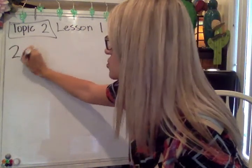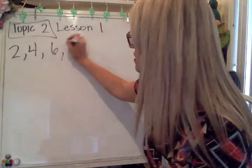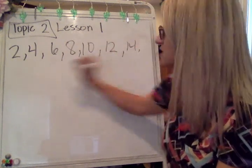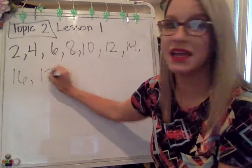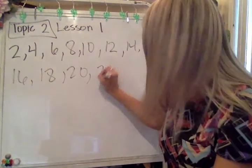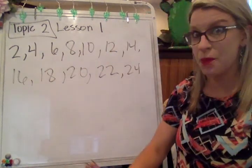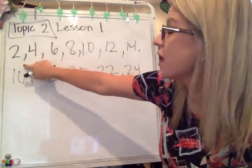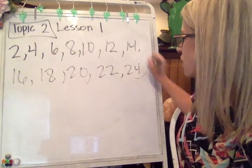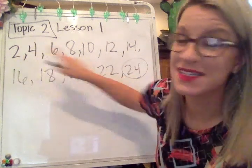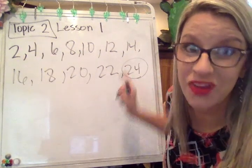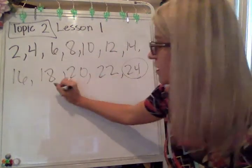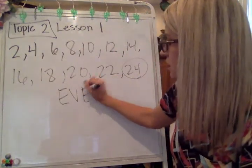If I was to count by twos: two, four, six, eight, ten, twelve, fourteen, sixteen, eighteen, twenty, twenty-two, twenty-four — I'm going to stop there. If I can skip count by twos and get to that number — let's say the number twenty-four — then I know that it's even. All of these numbers that we've written here are even numbers.